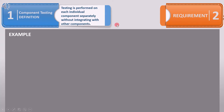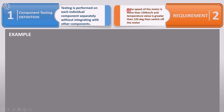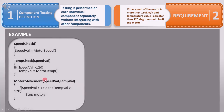Let's use an example to understand this definition. Suppose the requirement given by the customer is: if the speed of the motor is more than 150 km per hour and the temperature value is greater than 120 degrees, then switch off the motor. For this requirement, the developer writes code divided into three functions. In the first function, he checks the speed of the motor. In the second, he checks the value of the temperature. And in the third, he controls the motor — should it stop or keep running.